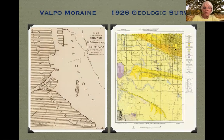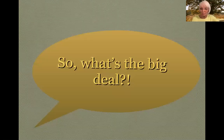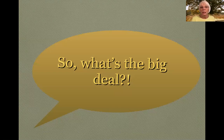Before we leave this slide altogether, we see the Valpo Moraine and the track it follows. Be aware that when you visit Gabus Arboretum, you're on the Valpo Moraine. So now we know everything there is to know about wetlands.